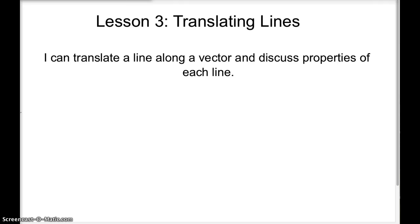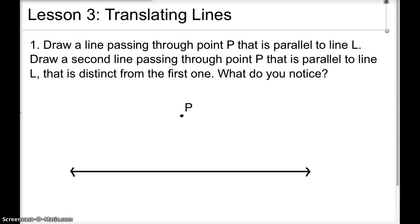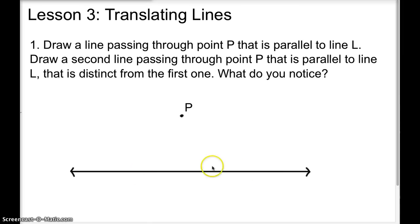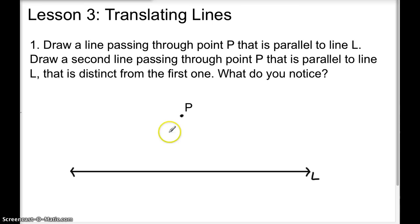On your notes, number one says: draw a line passing through point P that is parallel to line L. This is line L right down here. Remember that parallel means those lines will never touch or intersect each other, no matter how long or short they are.